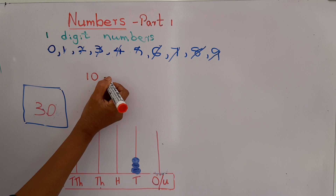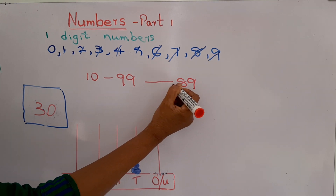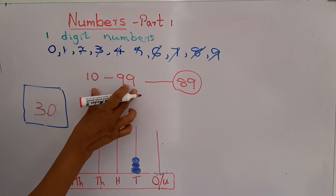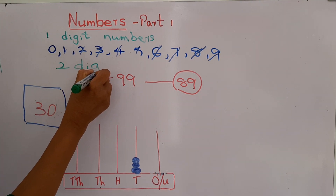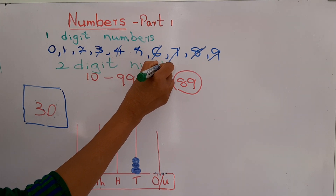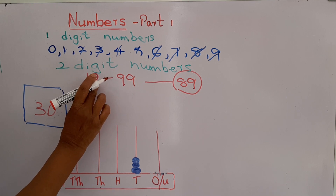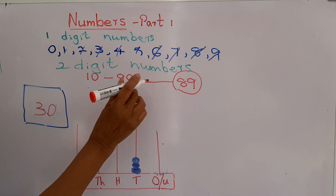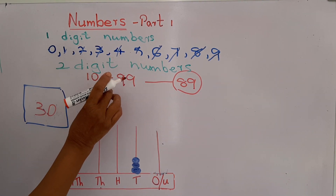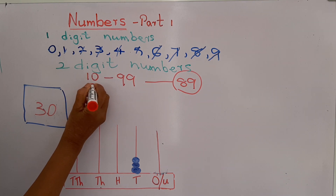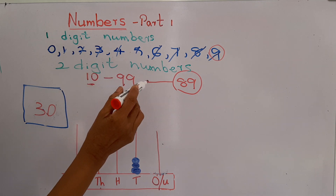Now we have learned about 1-digit numbers. After 9, we learn from 10 to 99 — you can write 89 numbers between 10 and 99. We call these 2-digit numbers because they have 2 places: the ones place and the tens place.